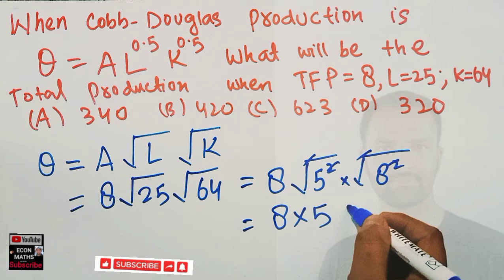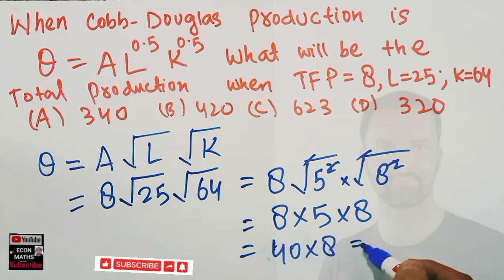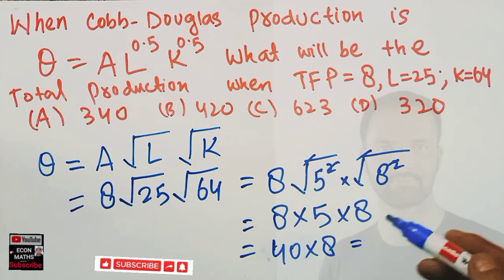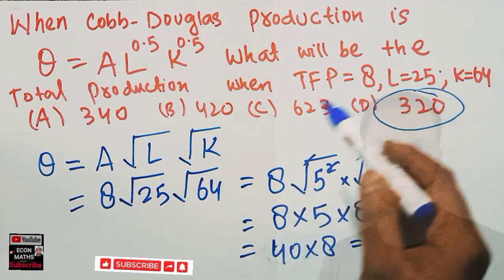× 5 × 8. This is 8 × 5 = 40, then 40 × 8. Working this out: 40 × 8 = 320. So the correct option is D, which is 320.